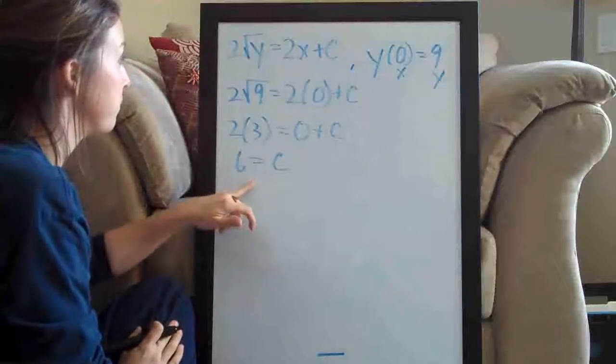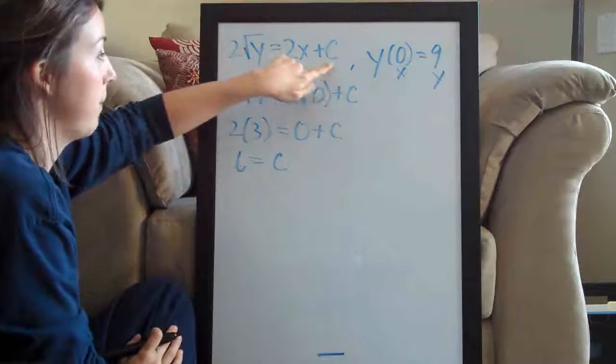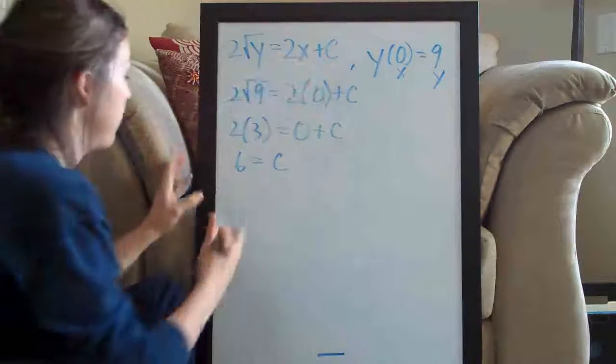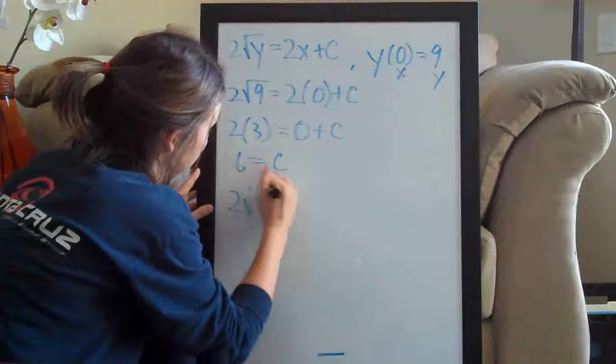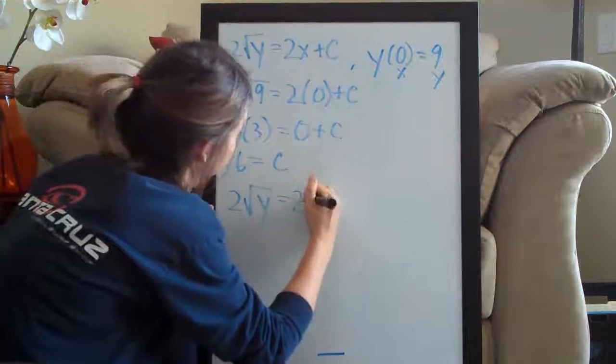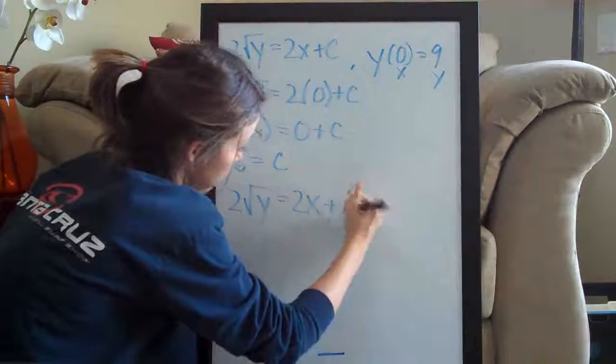Now that we've solved for C, we can plug it back in to our equation. So we have 2 times the square root of y equals 2x plus 6.